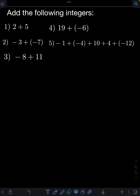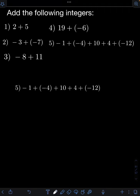Next, for number 5, we have negative 1 plus negative 4 plus 10 plus 4 plus negative 12. So let's start with the first two numbers: negative 1 plus negative 4. They have like signs — they are both negative. So we add the absolute value of the numbers. So 1 plus 4, that will be 5. But we must follow their same sign, which is negative. So we have negative 5.